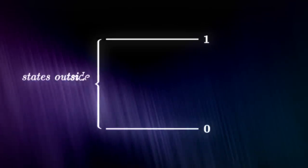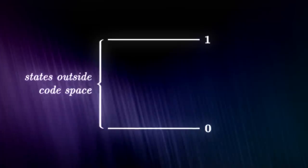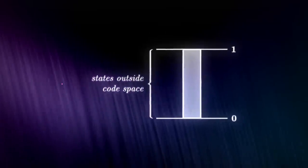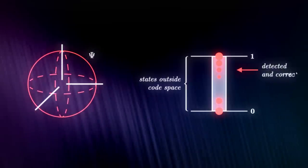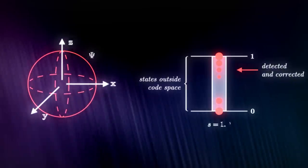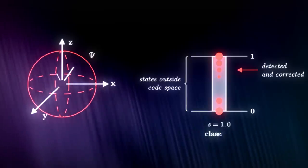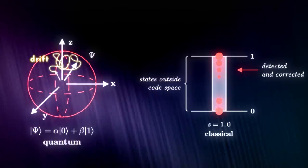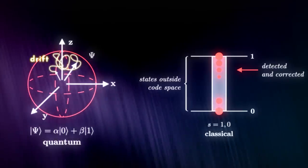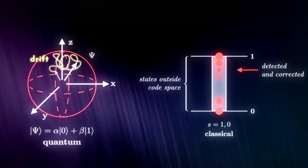Error correction ensures we get useful results. Classically, it's done by copying and storing information multiple times in case there's an error. Then the output will still give correct answers based on the majority of information all copied bits carry. This turns out to be impossible in quantum computing due to the no-cloning theorem, where it states quantum information can't be copied, so error correction must be done differently. Lots of techniques have been proposed in this regard, but we still have a ways to go.